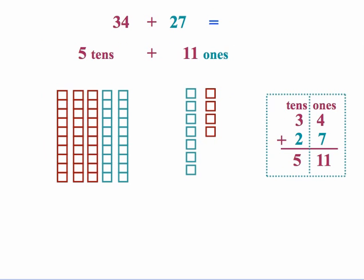So we added our tens, 3 and 2, that gave us 5 tens. But we have a problem again with the ones. We added 4 and 7, that gives us 11 ones. But we cannot express it this way.